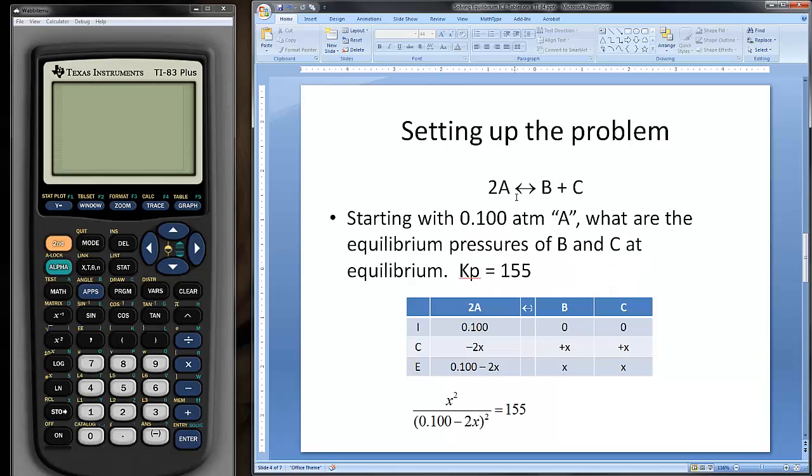Here's a typical problem: 2A makes B and C. We start with 0.1 atmospheres A, and we want to know what the equilibrium concentrations or pressures of B and C are with an equilibrium constant of 155. So we set up our ICE table. We write the equation for the reaction at the top line, then we type in I, C, E: initial, change, equilibrium.